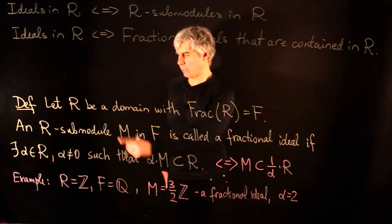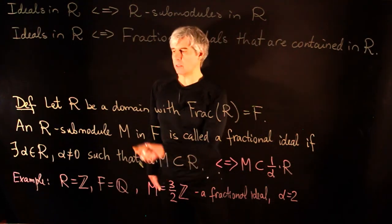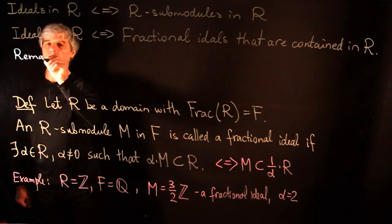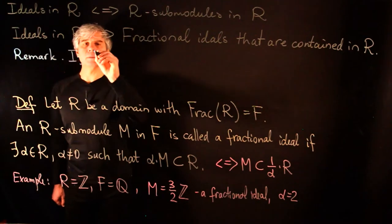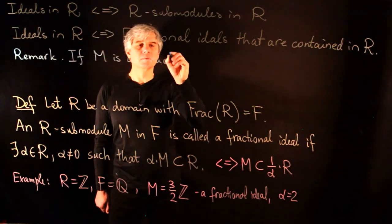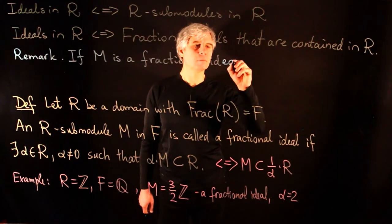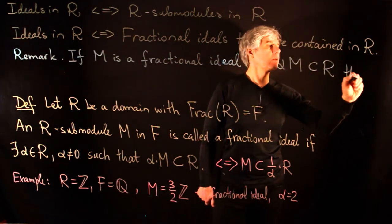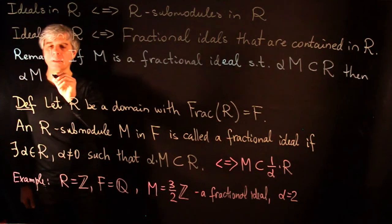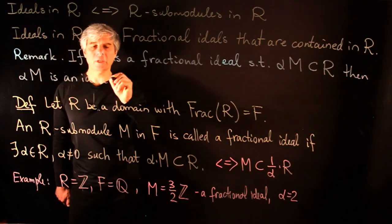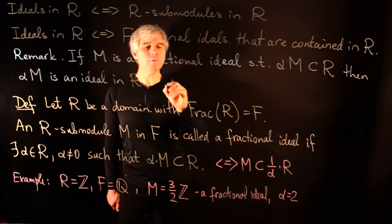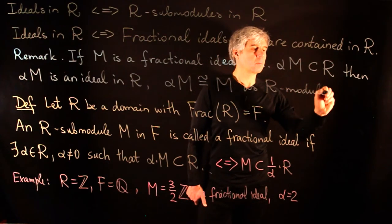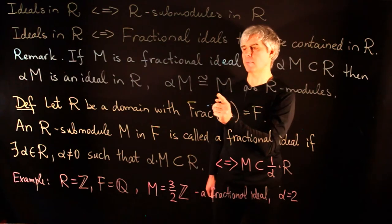If we take α = 1 in the definition of a fractional ideal, then we get just a usual ideal of the ring R. We have the following important remark: if M is a fractional ideal such that α·M is inside R, then αM is an ideal in R, and αM is isomorphic to M as R-modules because multiplication by α is the isomorphism between M and αM.